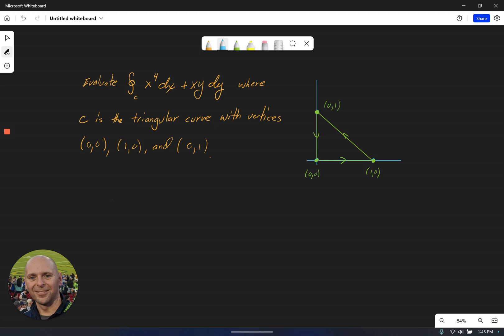So here we have an integral around a closed curve. We can see that it's oriented counterclockwise, so in our positive direction of some particular vector field. And again, C is this triangular curve with the vertices at the origin, (1,0), and (0,1).